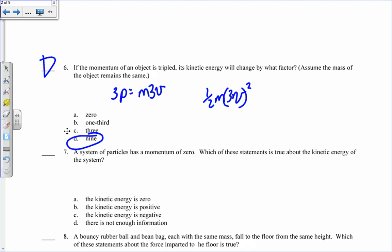The system of particles has a momentum of zero. Which of these statements is true about the kinetic energy of the system? If the momentum is zero, that either means that the velocity of all the particles equals zero, or it means that I have particles that are moving with equal momenta in opposite directions, so that the momenta cancel. So it could be either one of those. We don't know, so there's not enough information. That's d for number seven.